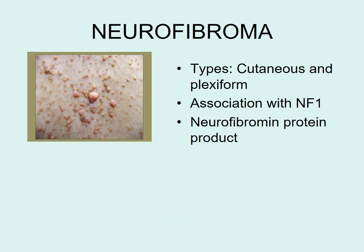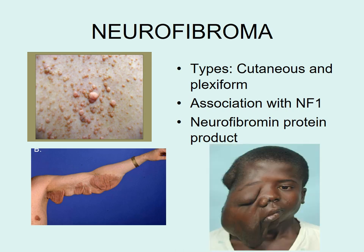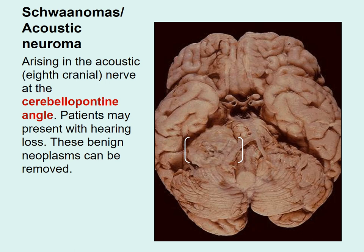Neurofibromas may be cutaneous or plexiform. Cutaneous neurofibromas are seen as discrete skin lesions, while plexiform neurofibromas involve large areas of skin. Schwannoma is another tumor arising from the 8th cranial nerve, with its typical location at the cerebellopontine angle. It is well circumscribed, benign, and can be surgically removed.